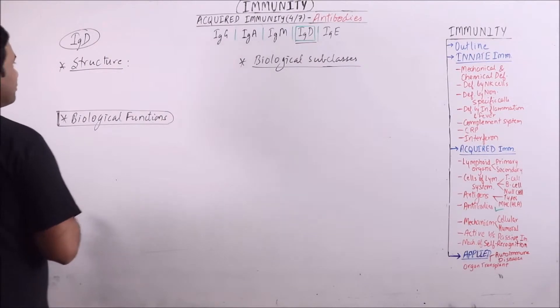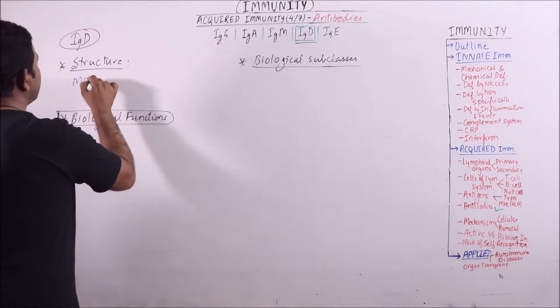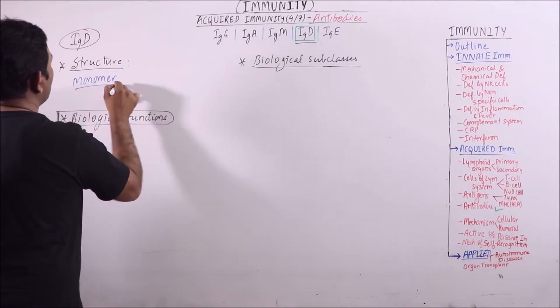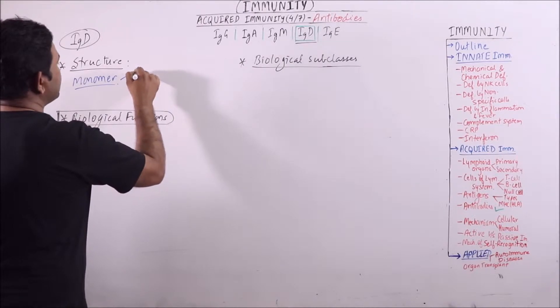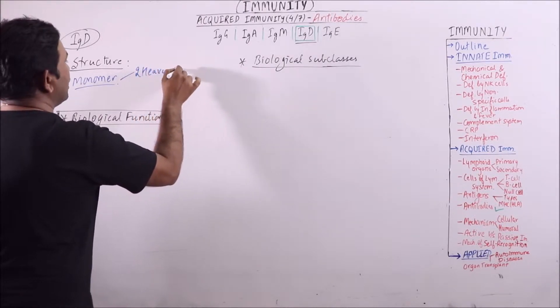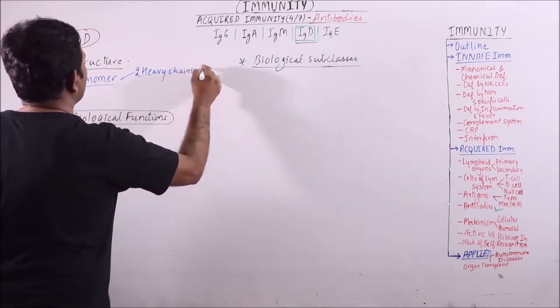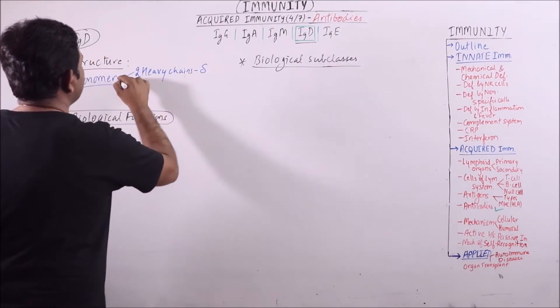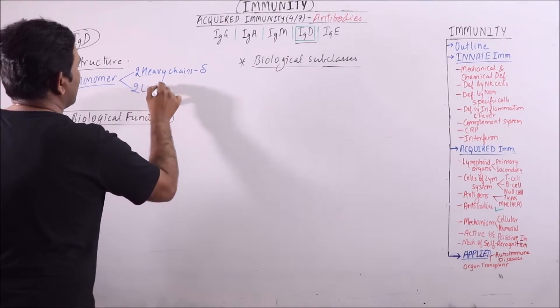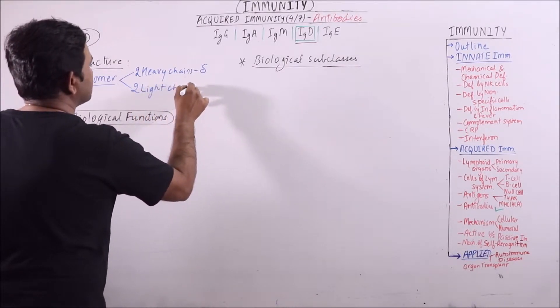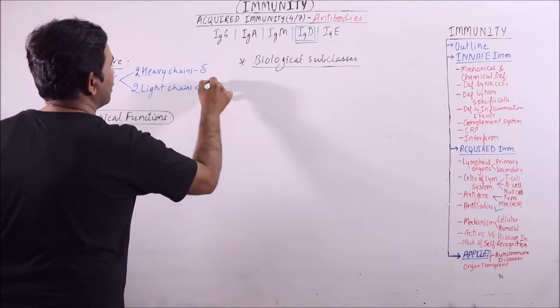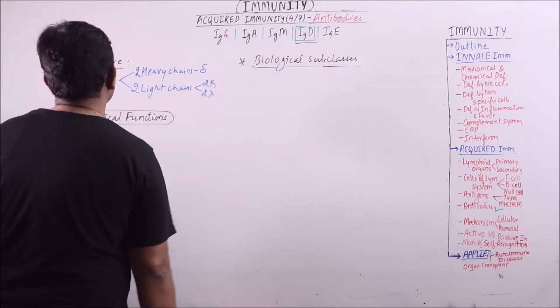Immunoglobulin D exists as a monomer and it has 2 heavy chains of delta type and 2 light chains of either 2 kappa or 2 lambda.